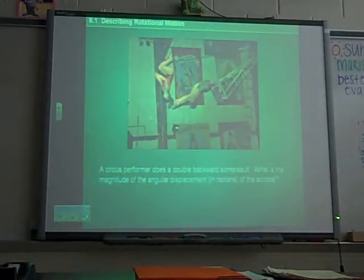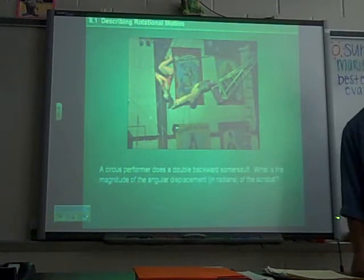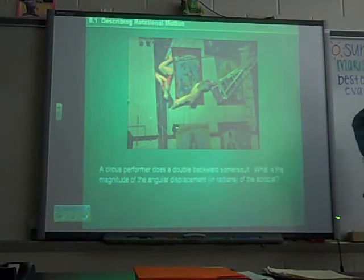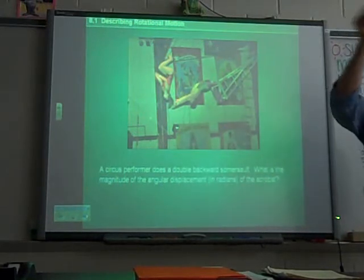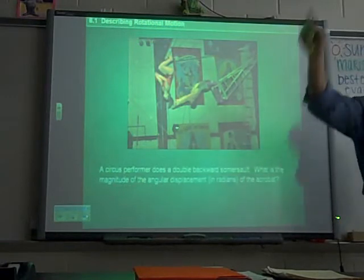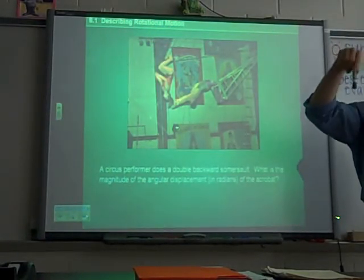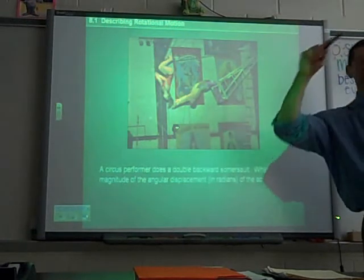A circus performer does a double backwards somersault. What is the magnitude of the angular displacement in radians? When you know, just call it, what? 0. 4 pi. 4 pi. Right? He goes 2 pi, 4 pi. Why did you say zero? Because he got back to where it started. Yeah. But remember, he went through a series of radians.